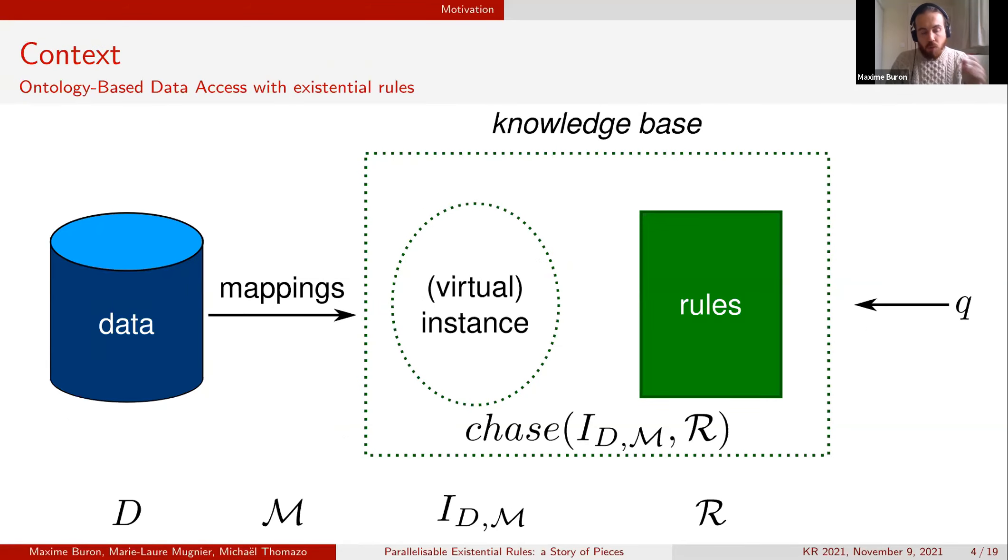What we have is D which will be the data, M which is the mapping, IDM is the instance generated by the data and the mappings, and R is the set of rules. To get the answer of the query we can trigger the mappings on the data in order to generate the instance and chase it using the set of rules.